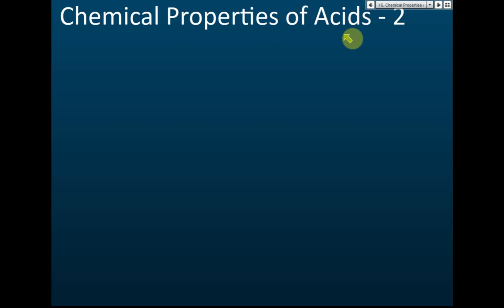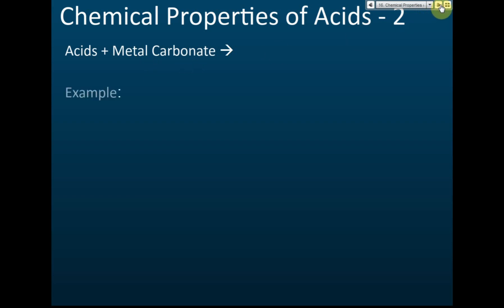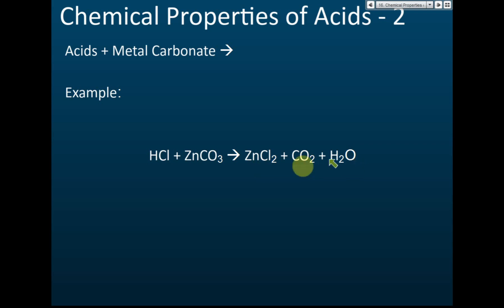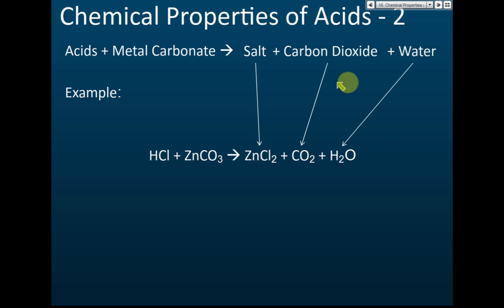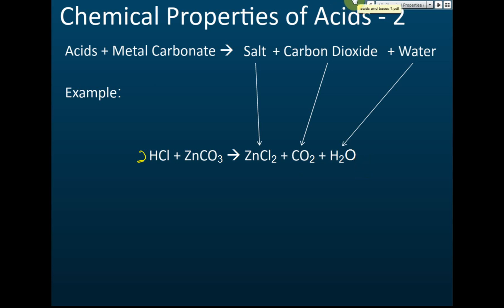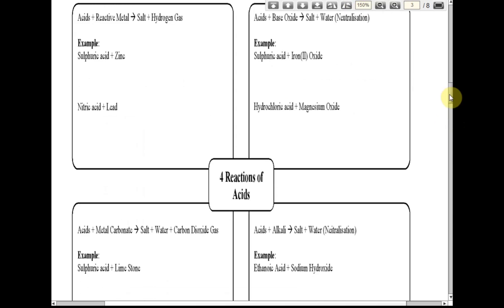Chemical properties of acids: acids react with metal carbonates to produce salt, carbon dioxide, and water. This equation is not balanced, so we need two hydrochloric acid molecules. Two hydrochloric acid reacts with carbonate to produce salt, carbon dioxide, and water.